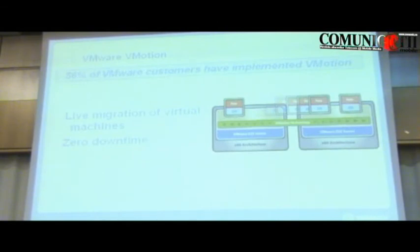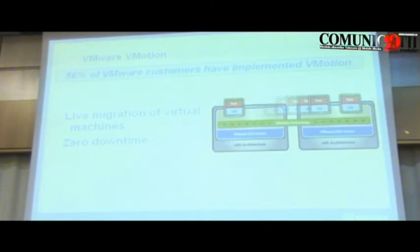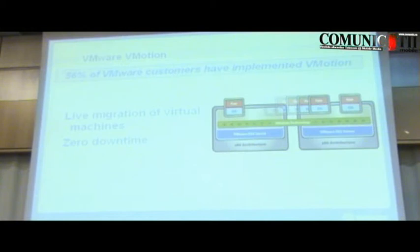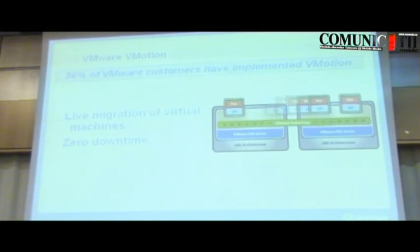vMotion is something which has been impressive for quite some time. For people who understand IT a little bit, it's quite impressive. vMotion means that you have two virtual machines running on two physical servers, and you need to move your virtual machine from one physical machine to another. We take the content of the RAM where the virtual machine is running and transfer it over a gigabit network interface. It takes about two seconds to move a virtual server from one physical server to another.